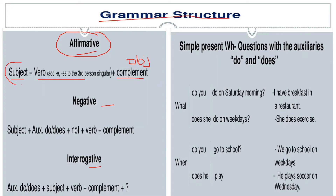What does that mean? There is 'she' which is a subject, verb is 'plays', and the object is 'cricket.' So what is the sentence doing? It is connecting the subject to the object. The connection between subject and object is a verb that defines the tense.